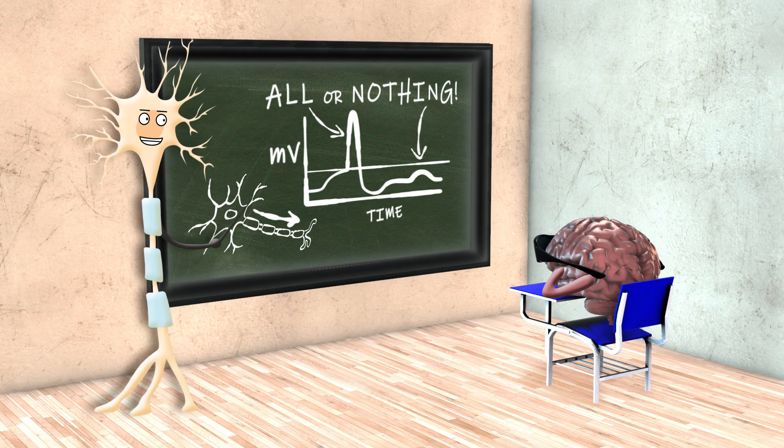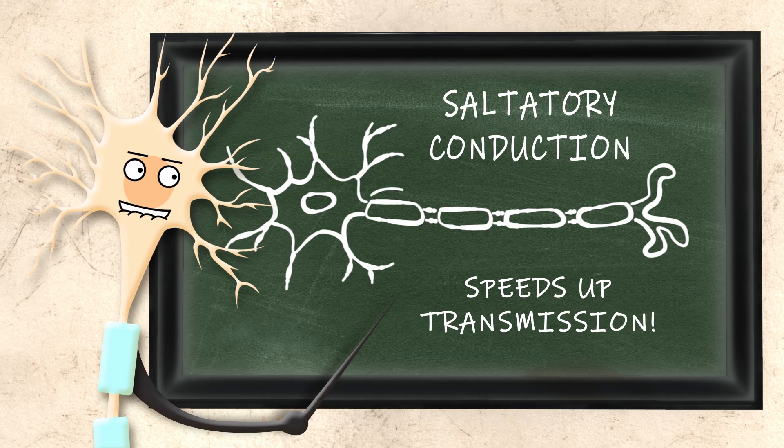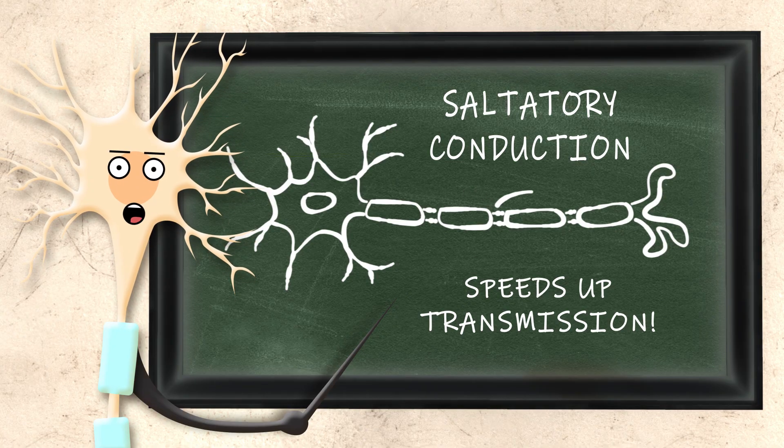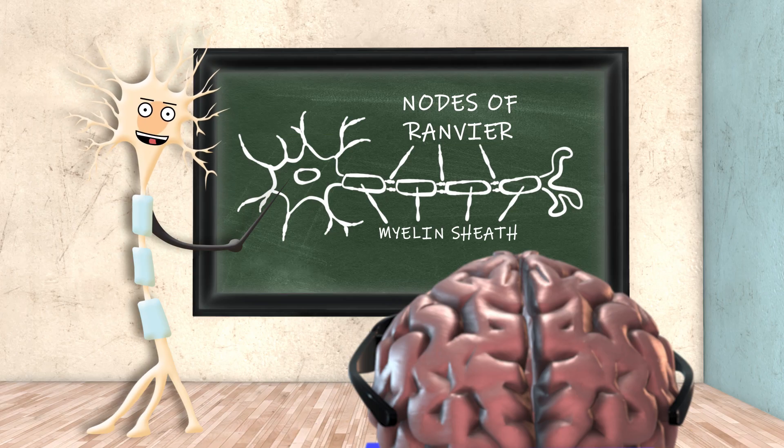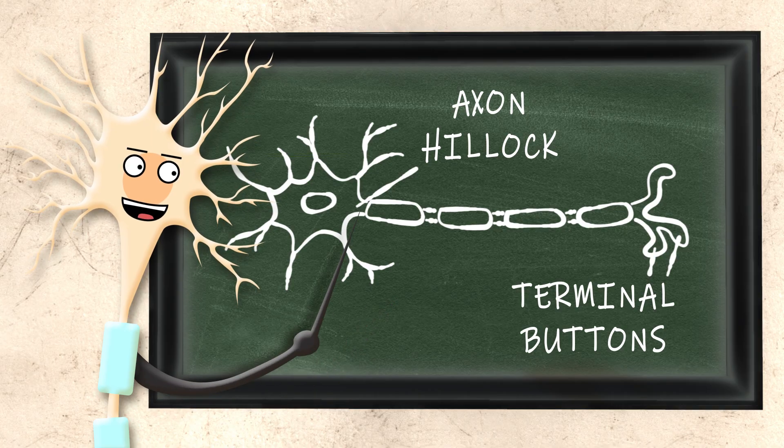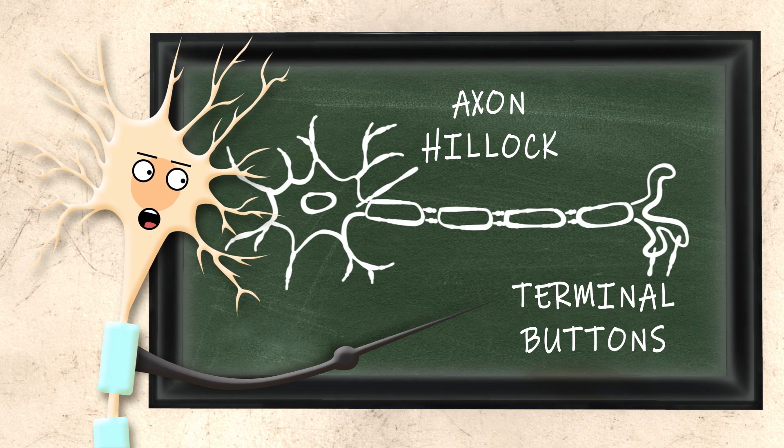APs are all or nothing, and travel in one direction, they travel quickly due to saltatory conduction. Propagating along nodes of Ranvier, the signal hops, from the axon hillock until at terminal buttons it stops.